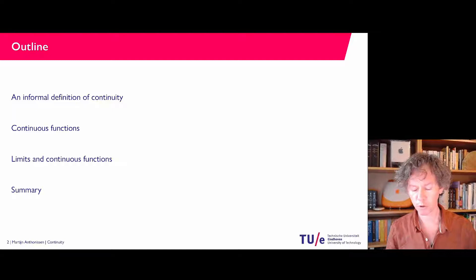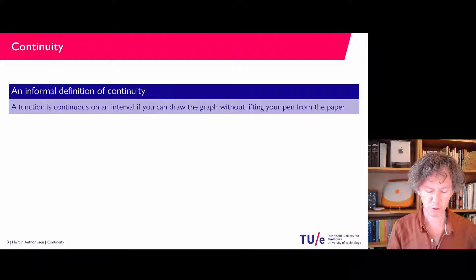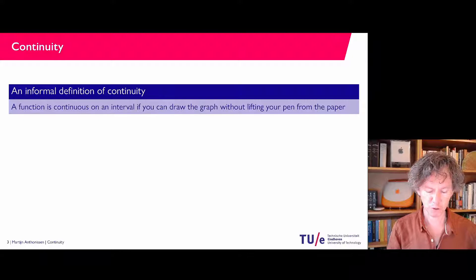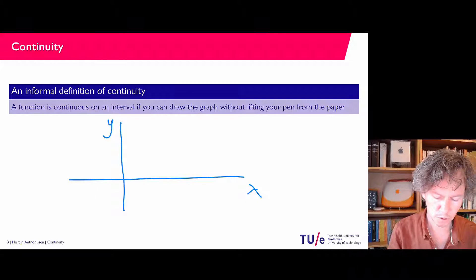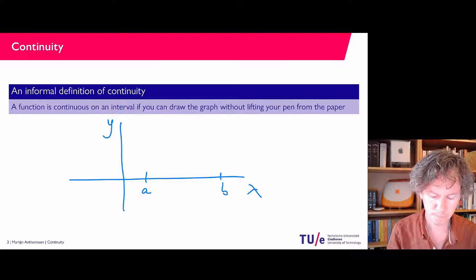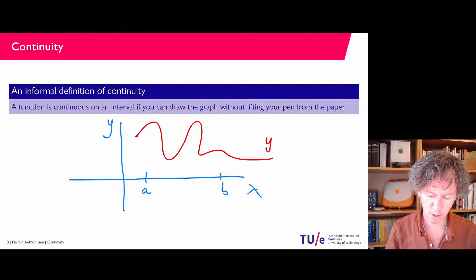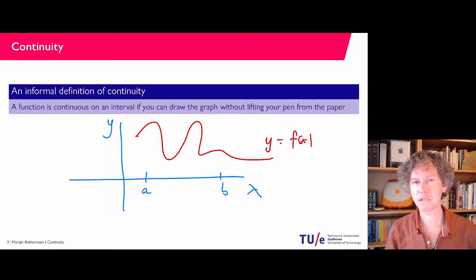First of all, an informal definition. So what is a continuous function? Say that we have a vertical axis and horizontal axis — x, y. A function is continuous on an interval. In general we can consider an interval from a to b. If you can draw the function without lifting your pen from the paper — starting at one end of the interval, it can have all kinds of shapes — then y = f(x) is a continuous function.